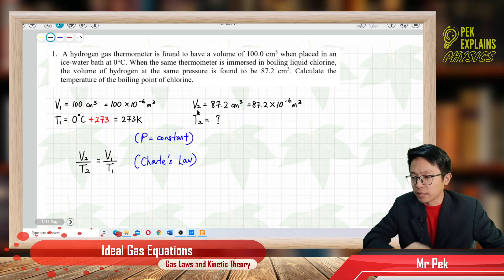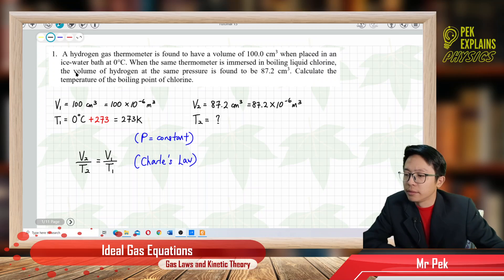All right, now let us discuss tutorial question 1. A hydrogen gas thermometer is found to have a volume of 100 cm³ when placed in an ice water bath at 0 degrees Celsius.